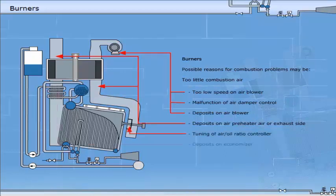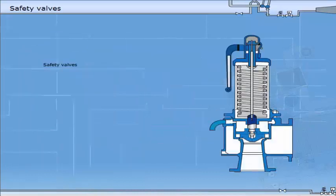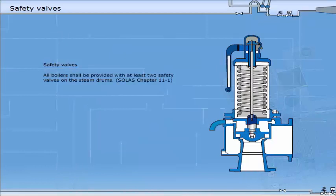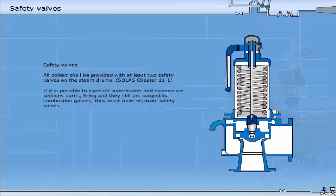All boilers shall be provided with at least two safety valves on the steam drums, SOLAS Chapter 2-1. If it is possible to close off superheater and economiser sections during firing, and they are still subject to combustion gases, they must have separate safety valves.